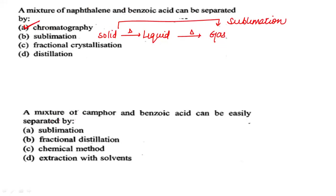A mixture of camphor and benzoic acid can be separated by which method — sublimation, distillation, chemical method, or extraction? Option C — sublimation — is the right answer. This question has been repeated in many entrance exams, so please note it down in your copy.